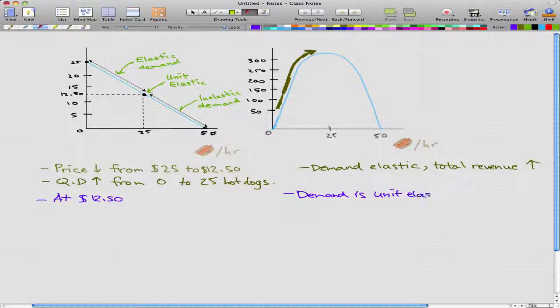Remember from the past videos, I told you that when the demand is unit elastic, the total revenue doesn't change. The total revenue is unchanged. So total revenue stops increasing.